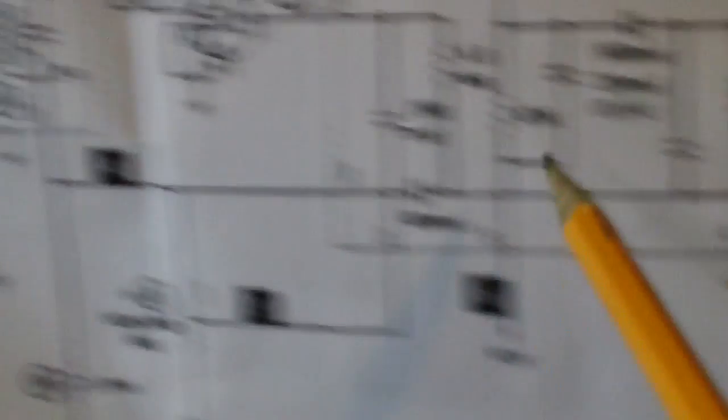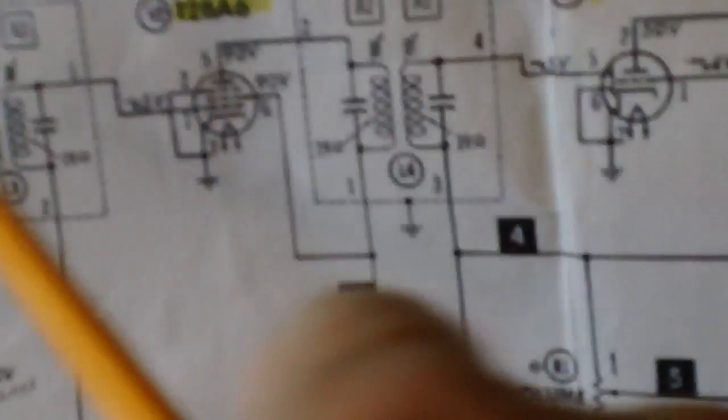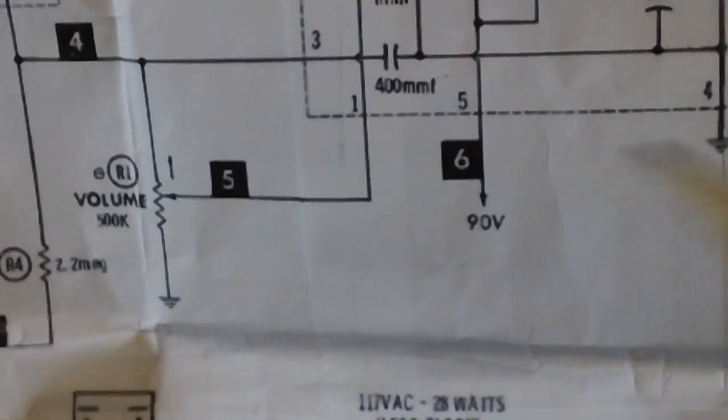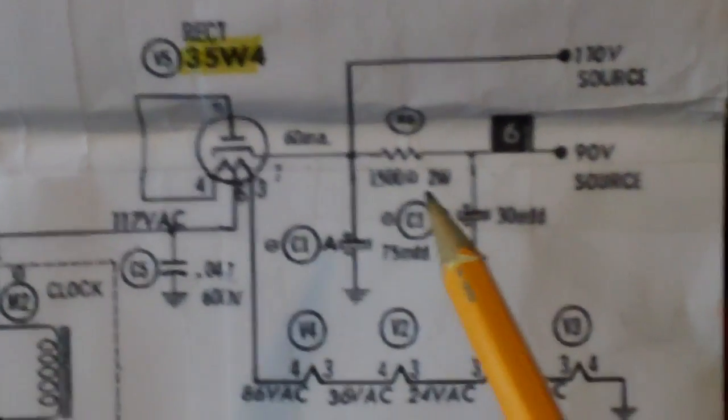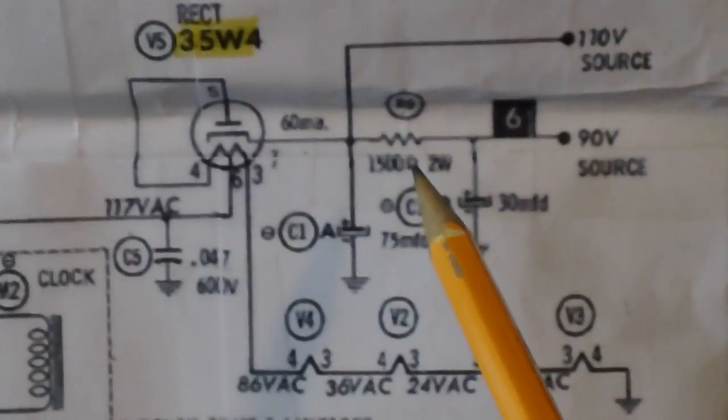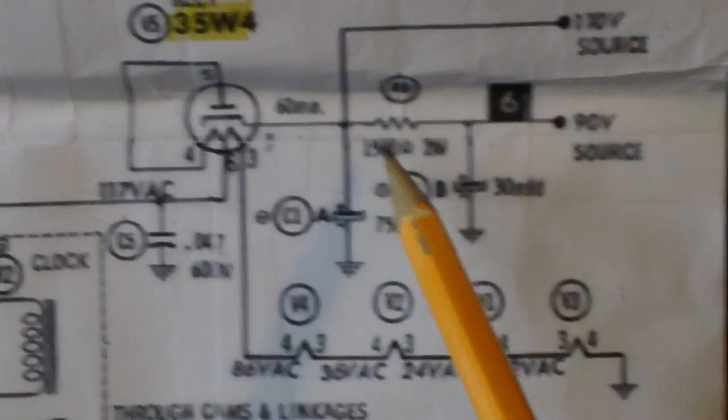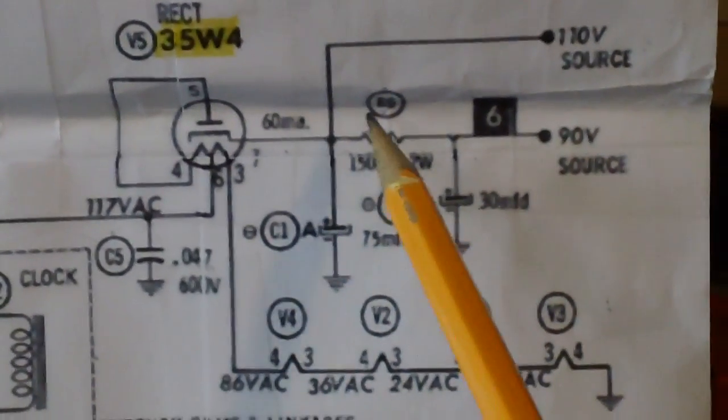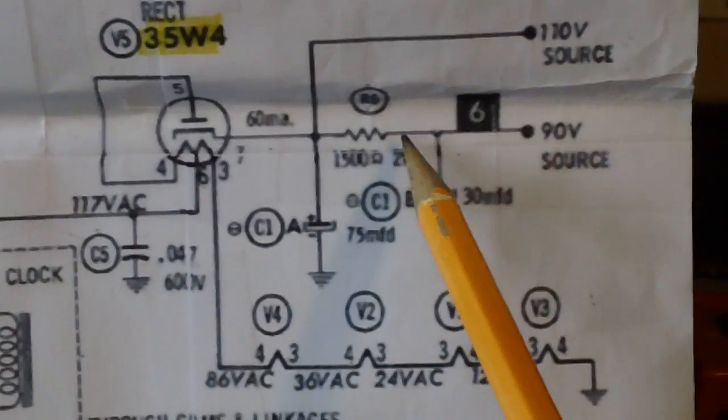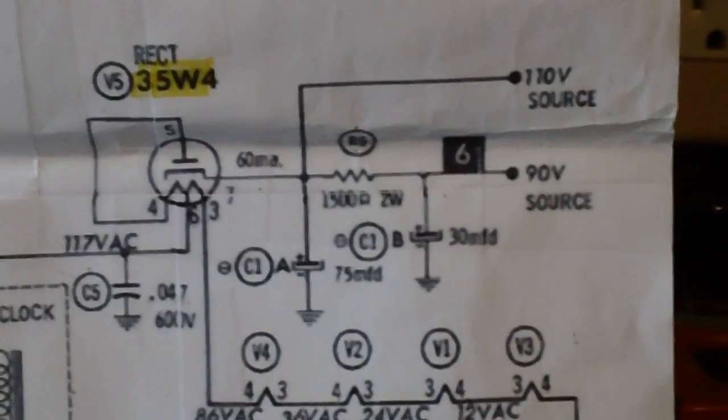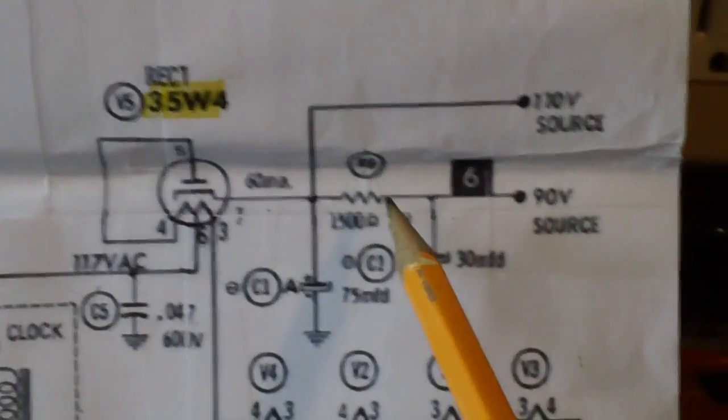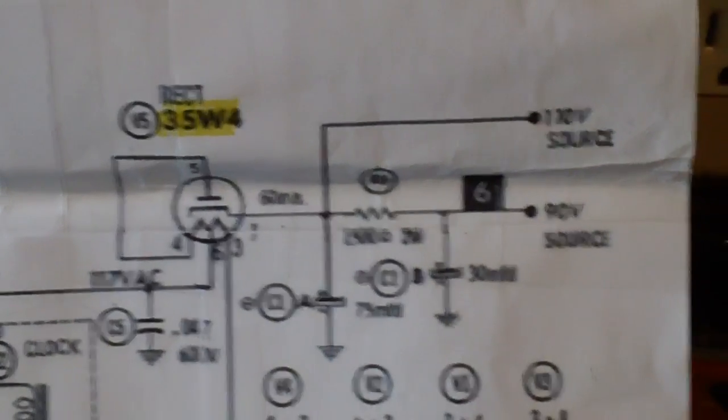Now that 90 volts is used for the plate voltages for the rest of the tubes. We have 90 here, we've got 50 here, and 90 over here, and anywhere else the voltage is needed on the screen grids and whatnot. So my question is, or your question should be, what happened on these old resistors, they always increase in value when they get old. What happens if that 1500 ohm 2 watt resistor were to increase by another 1000 ohms? Suppose it went up to 2500 ohms. How would that affect the operation of the radio? And for that matter, what would happen if it decreased? How would that affect the radio?